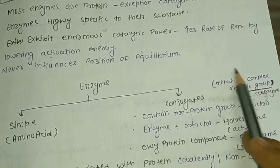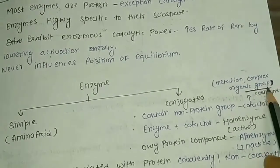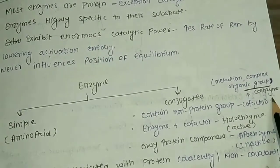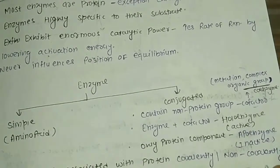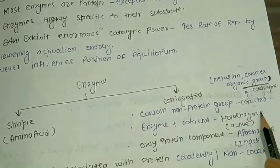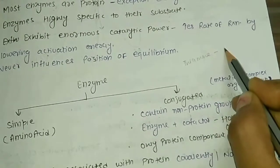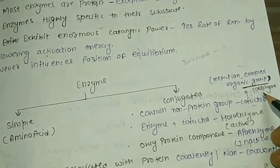Cofactors are of two types: metal ions and complex organic groups called coenzymes. Coenzymes include vitamins such as vitamin B1, B2, and B6. For example, the coenzyme present in vitamin B1 is thiamine pyrophosphate, which is involved in decarboxylation reactions.